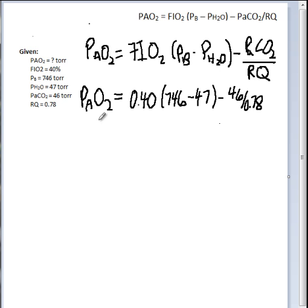So here's what it looks like when I write it out with all of the givens inserted in and carrying out the math. If I subtract 47 from 746, I get 699. And then 46 divided by 0.78 is 59.